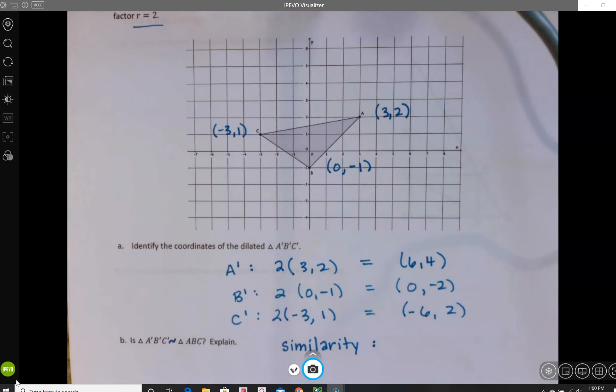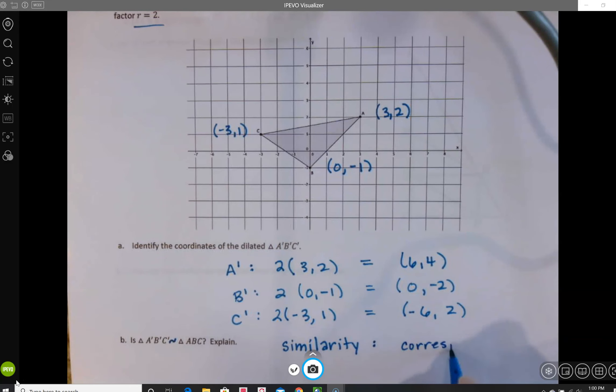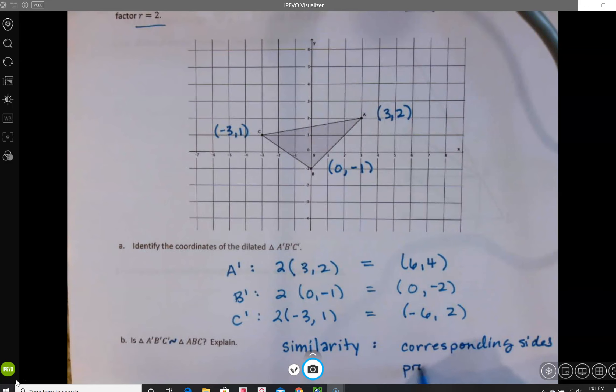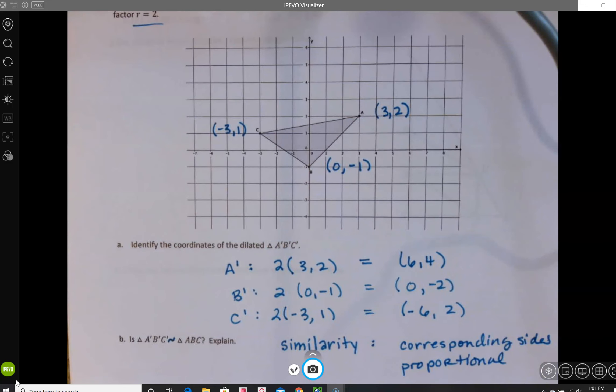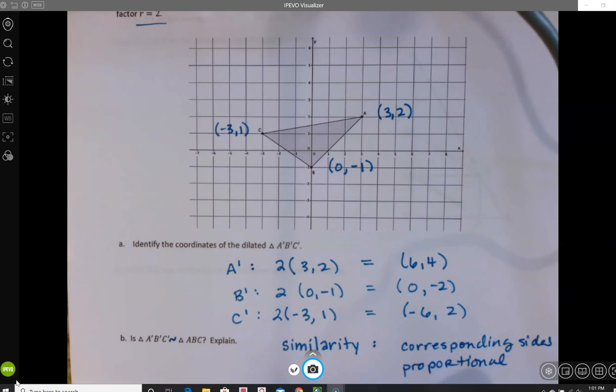In order for two things to be similar, corresponding sides must be proportional, and corresponding angles must be equal.